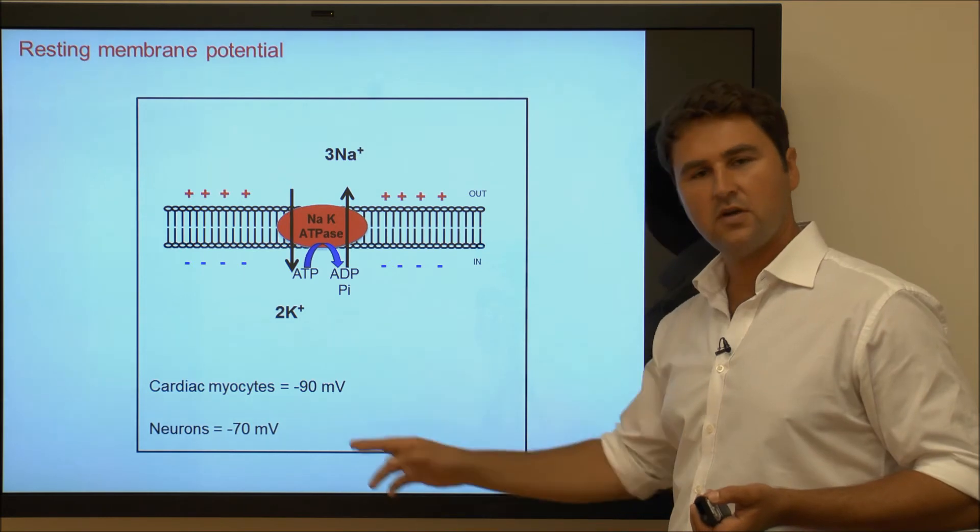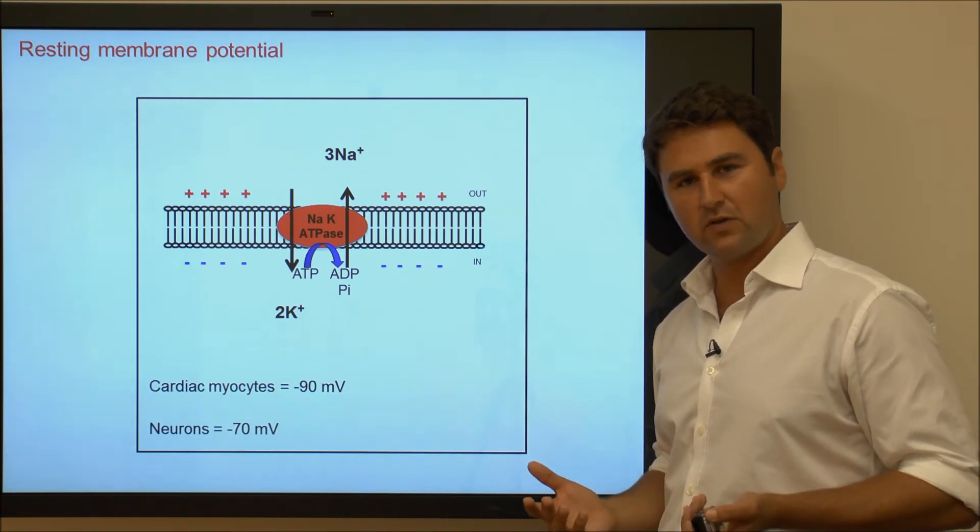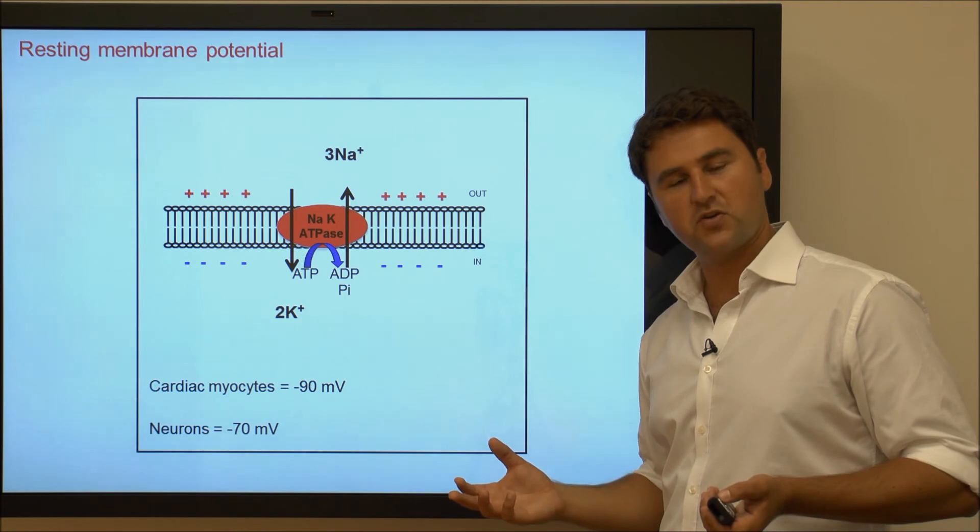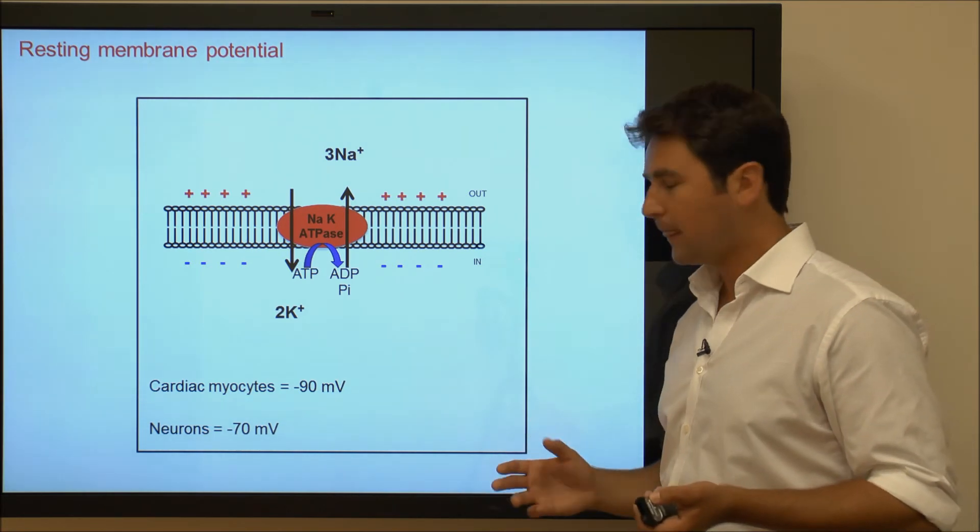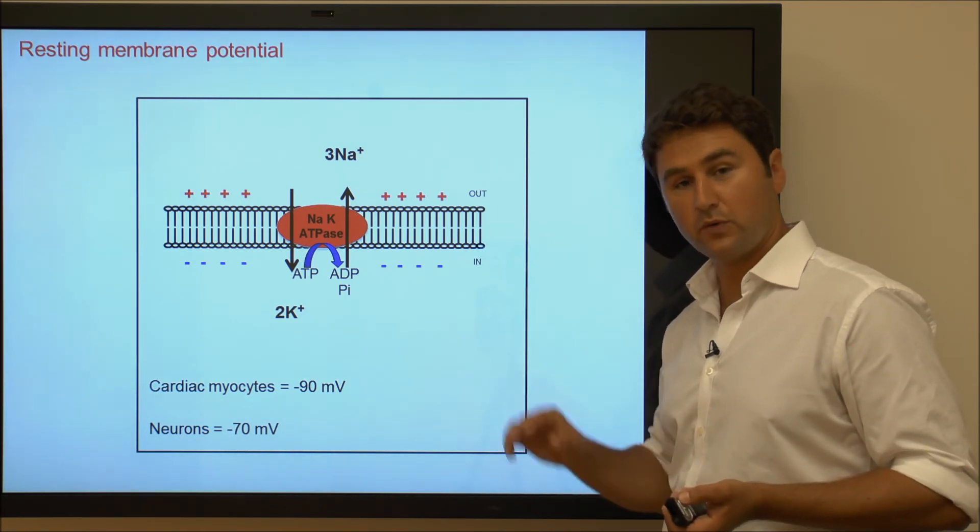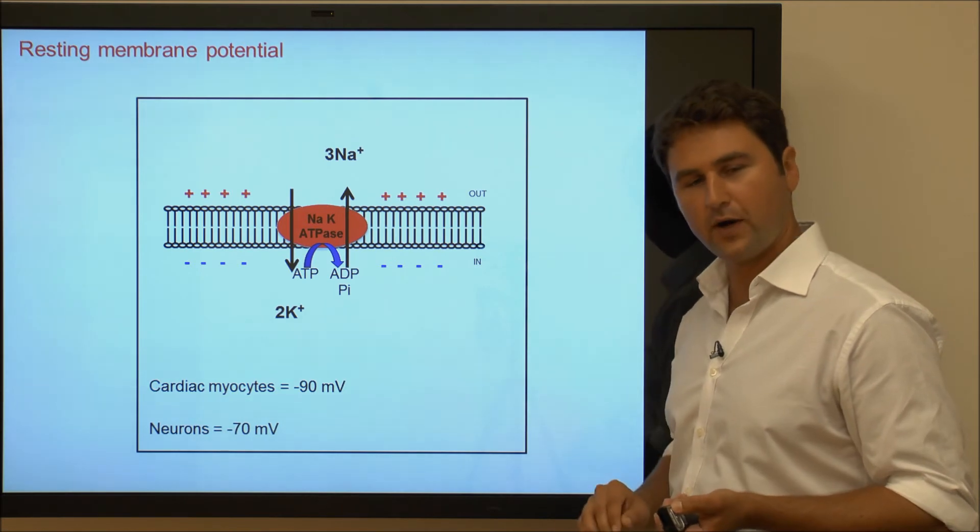In neurons, this is around -70 mV, whereas in cardiac myocytes the resting membrane potential is around -90 mV. In subsequent videos, I will talk a little bit more about why this is so.